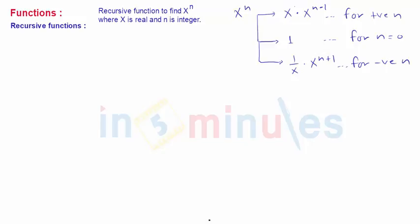For positive n when n is positive that is power is positive x raise to n is 1 if n is 0, anything raise to 0 is 1, and x raise to n is given by 1 upon x into x raise to n plus 1 when n is negative.